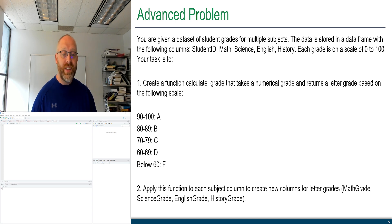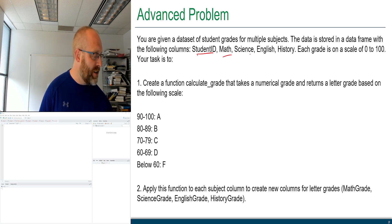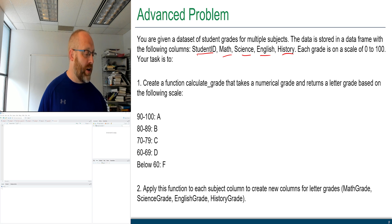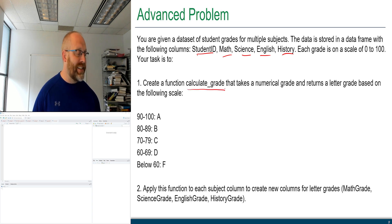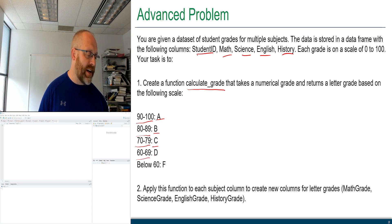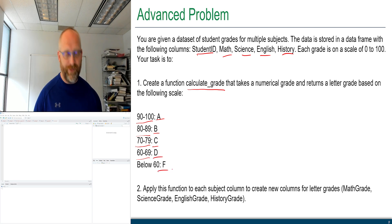Let's work through an advanced problem — I believe this is the last problem of this set of slides. You are given a dataset of students' grades for multiple subjects. The data is stored in a data frame with columns: student ID, math, science, English, and history. Each grade is on a scale of 0 to 100. The first task is to create a function called calculate_grade that takes a numerical grade and translates it into a letter grade: 90–100 is an A, 80–89 is a B, 70–79 is a C, 60–69 is a D, and anything below 60 is an F.